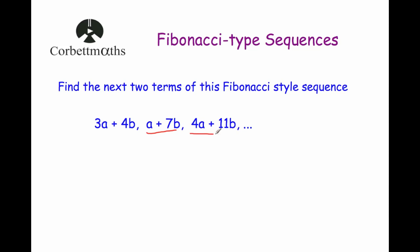So a plus four a would be five a, plus seven b plus eleven b would be eighteen b. So that's the fourth term. And finally the fifth term would be four a plus five a is nine a, and eleven b plus eighteen b would be twenty-nine b. And that's it. So Fibonacci style sequences can lead themselves quite nicely to algebra questions like this one. But just remember to generate a Fibonacci style sequence or Fibonacci type sequence, just add together the two previous terms to get the next one.